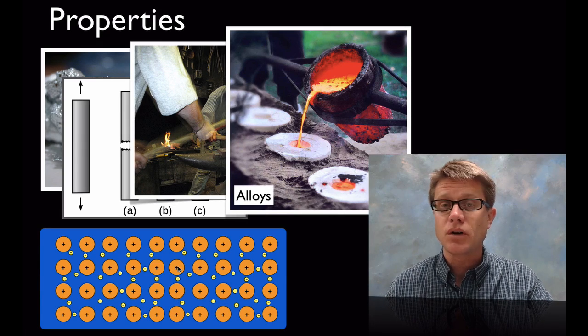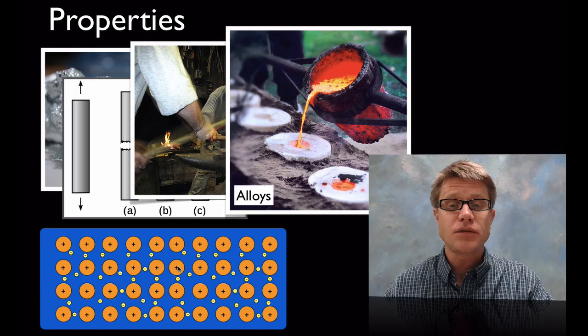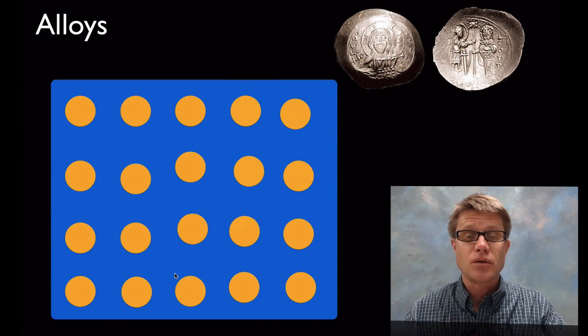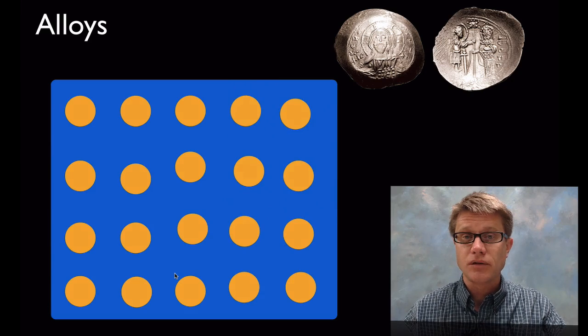And also they can form alloys. And we've known this for years. That we can heat different metals and we can get different characteristics from that. And so electrum we'll remember is an example of mixing gold with silver.